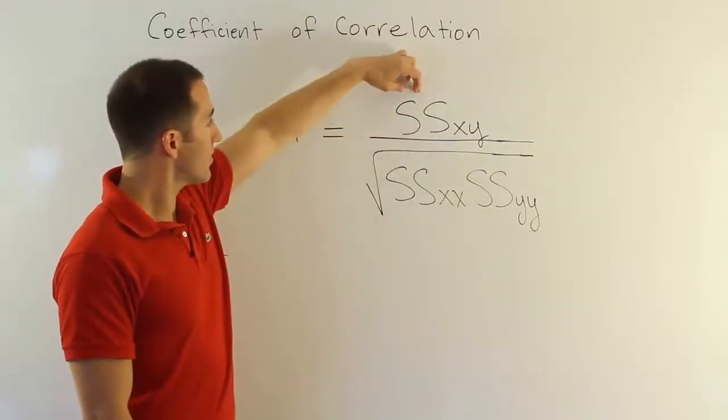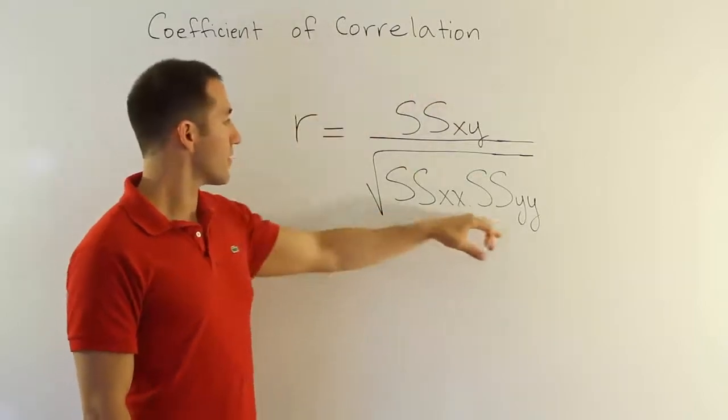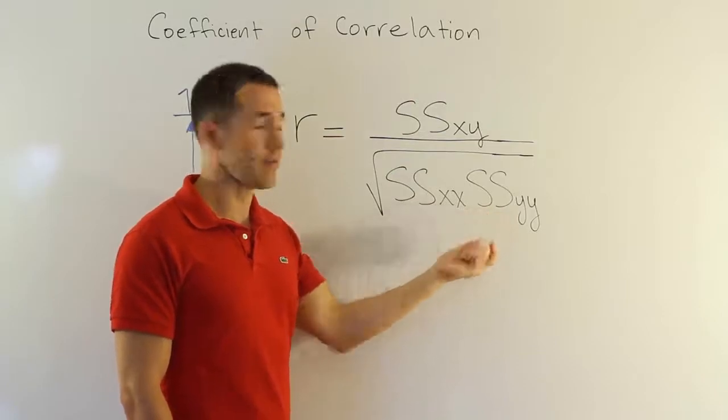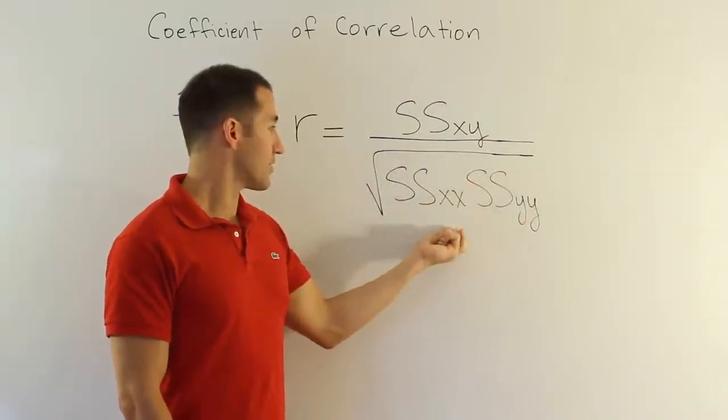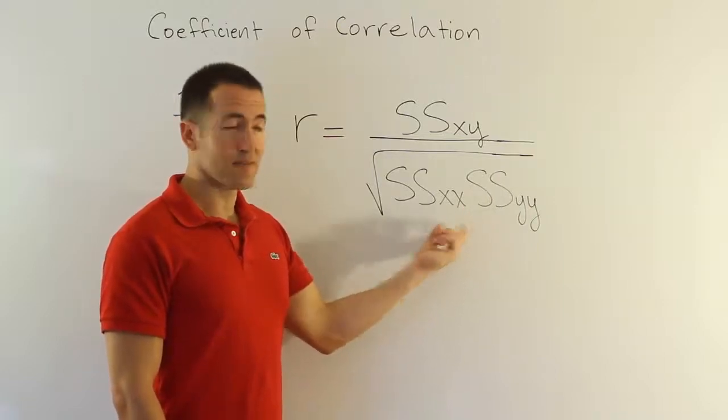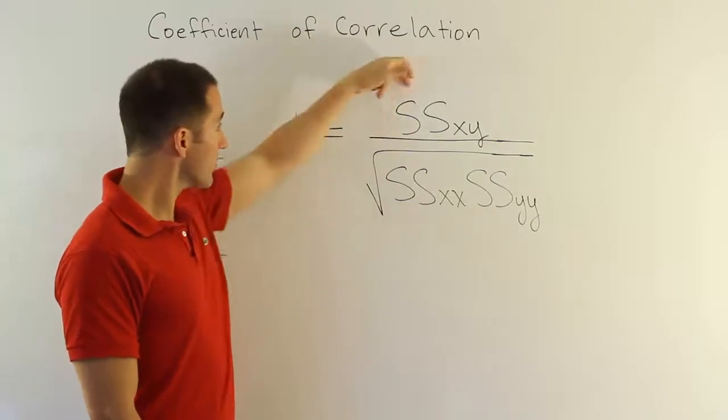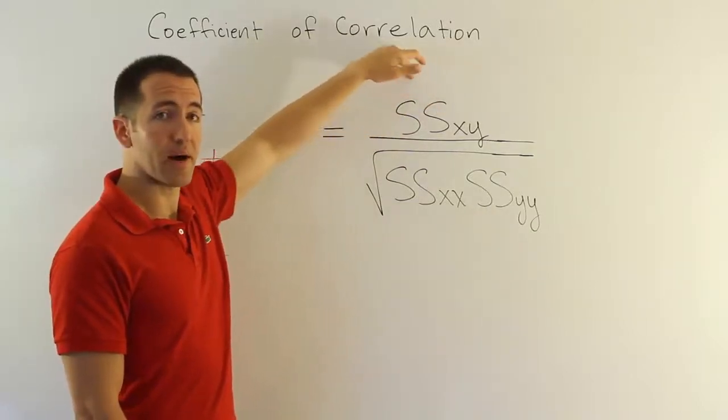So notice that this one is the only one that can be negative. Normally the sum of square values are all positive. This one can never be negative, this one can never be negative. That's actually a good thing because it's in a radical over here at the bottom. I need to make sure that the product here is positive so that we can take the square root and get a real value. So the sum of square for x, y here, this one can be negative or be positive.